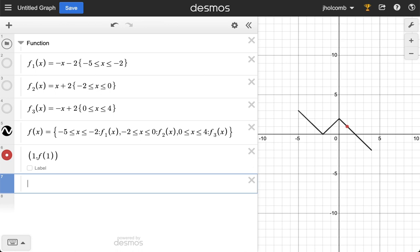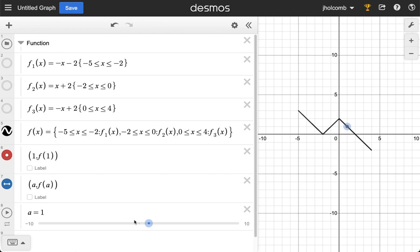Now of course we can be more cool. So now I'm just going to say, hey, I just want some value a, some number a, and I want to evaluate our function using a. So we make a slider. And now what happens? Oh goodness, it's gone.